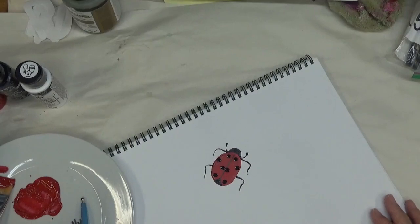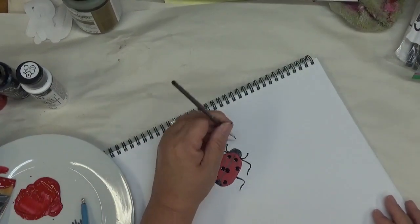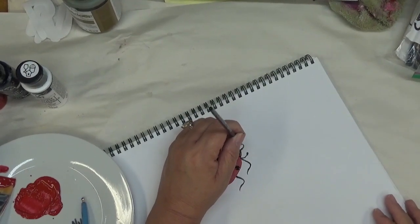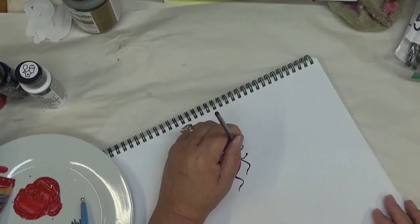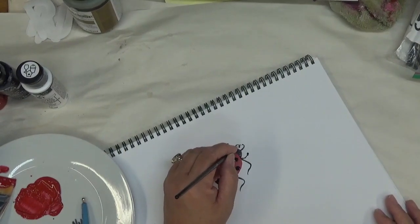And this little guy, he's gonna be running around getting into everything. Alright, and then we're going to put the little antennas at the top of his head. I always like to make them not be identical in length - not sure why, but I like them like that.